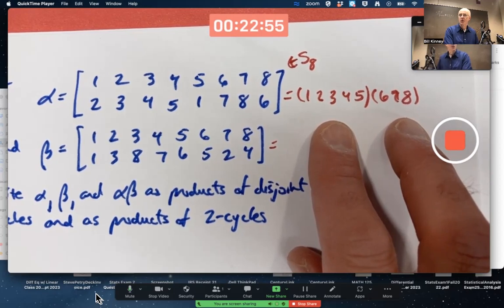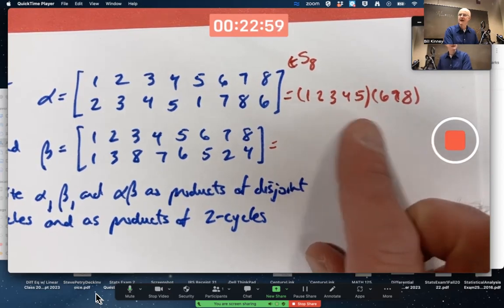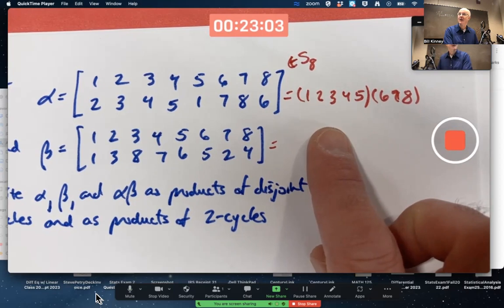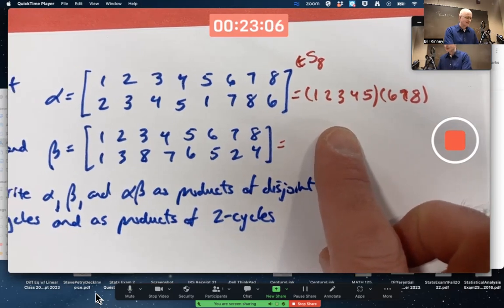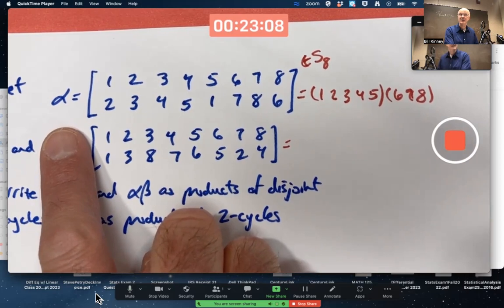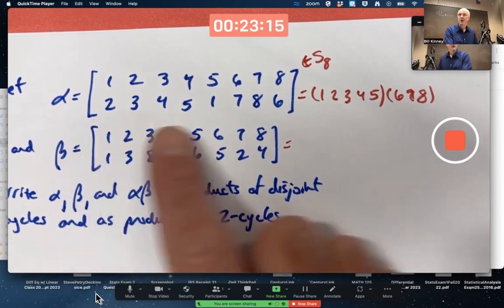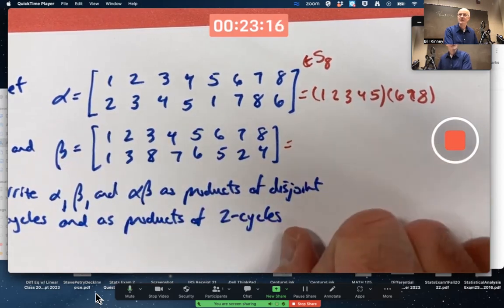Also because they're disjoint, the order of alpha would be the least common multiple of the lengths of these cycles. LCM of 5 and 3 would be 15. Order of alpha is 15. You wouldn't want to take the time to compute powers of alpha, would you? But we know from the theorem, the order of alpha is going to be 15.